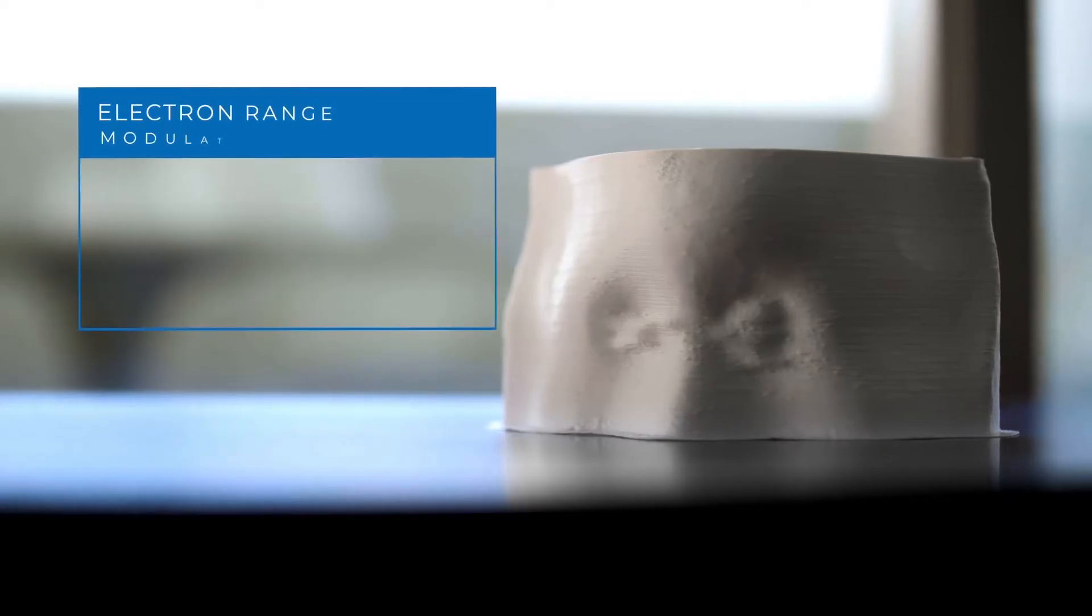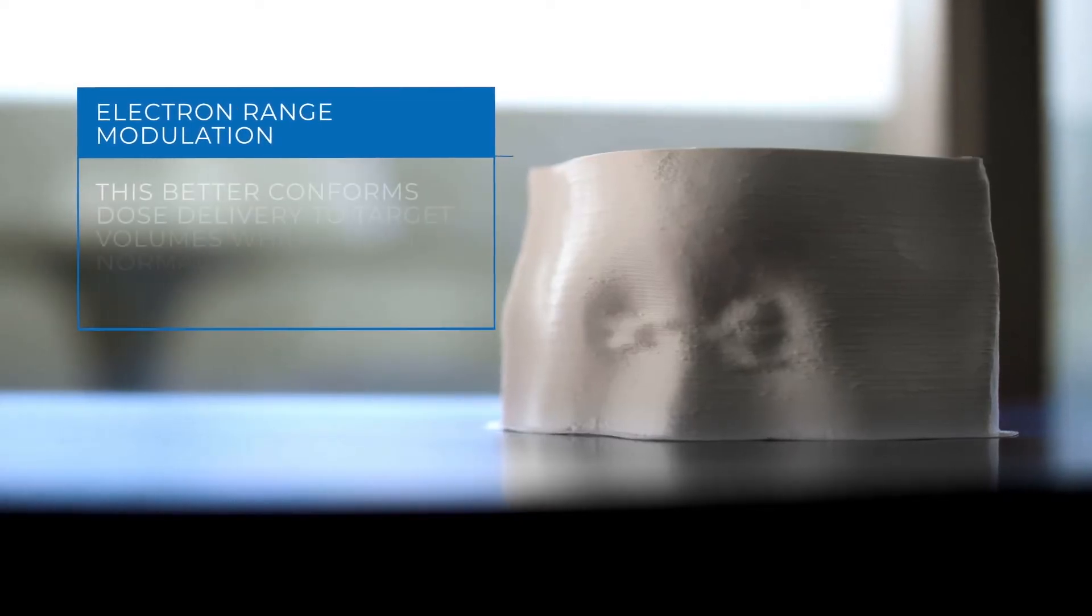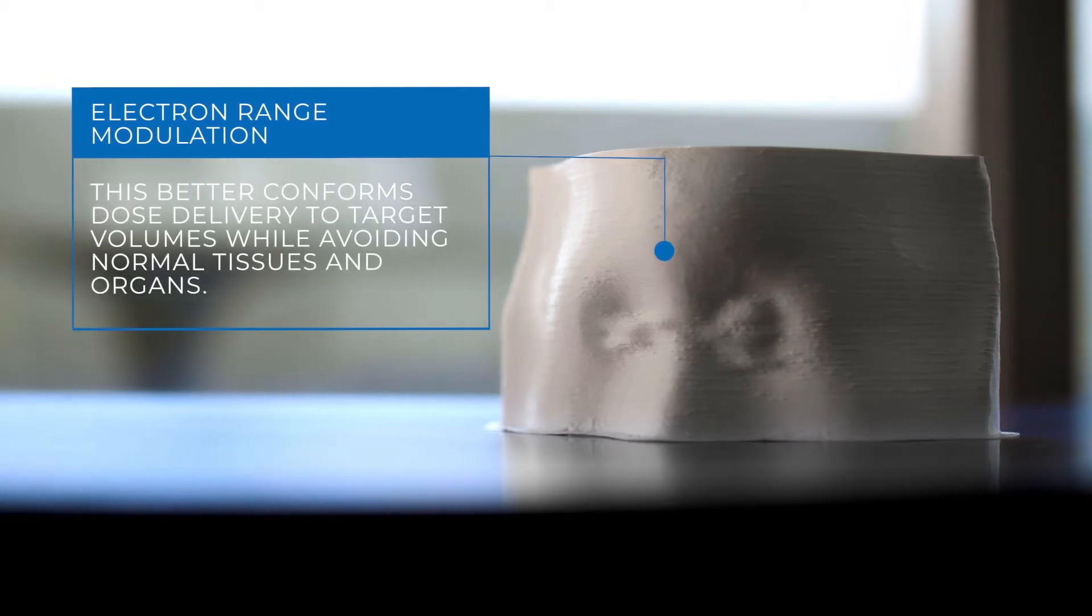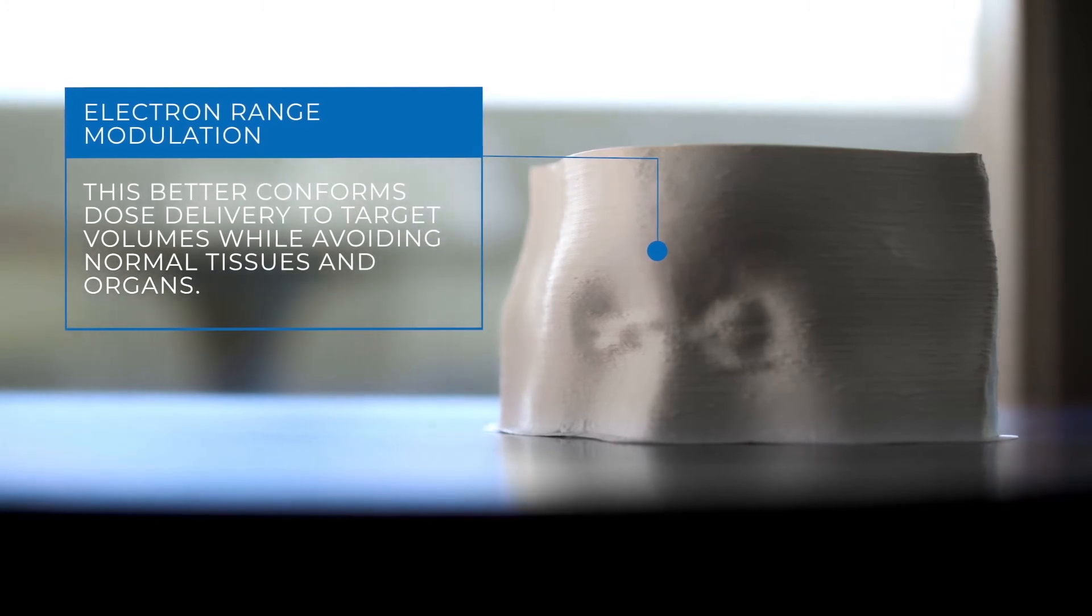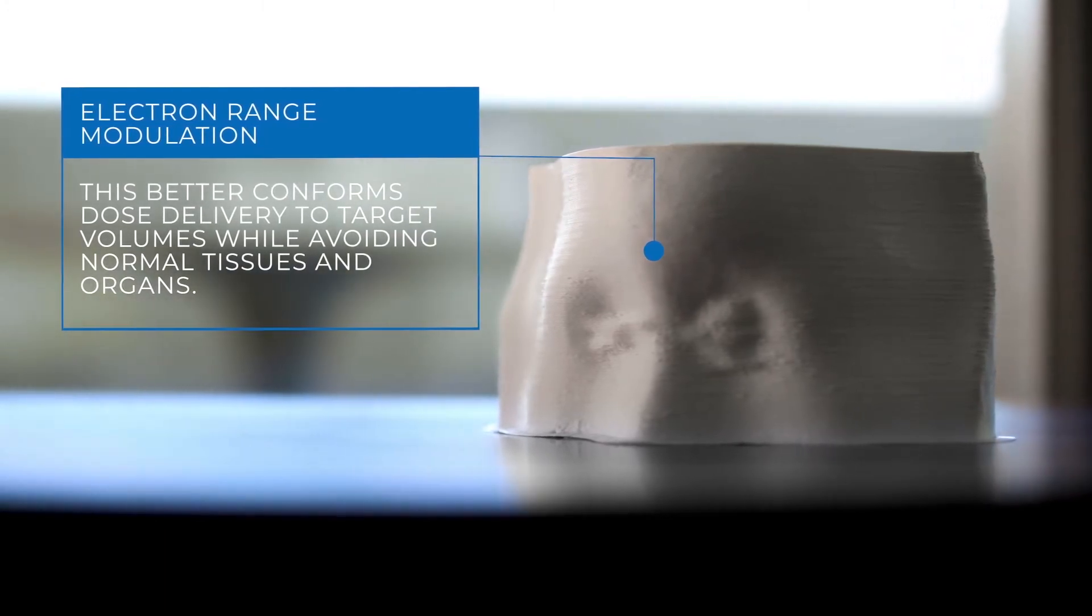Adaptive's solution provides electron range modulation, allowing centers to better conform dose delivery to complex superficial target volumes while avoiding underlying normal tissues and organs at risk from irradiation.